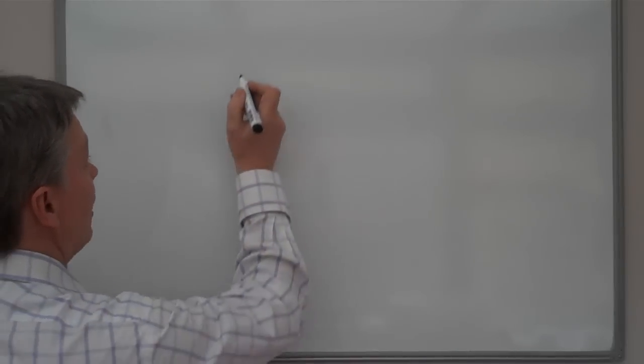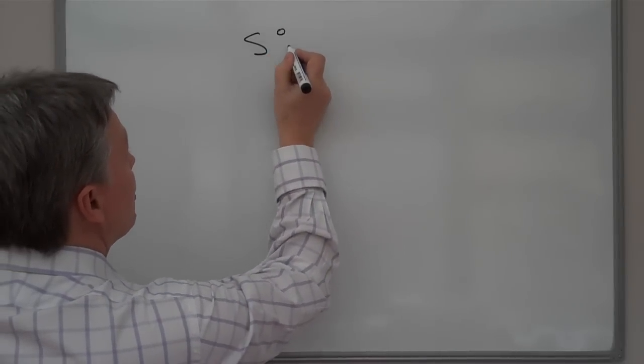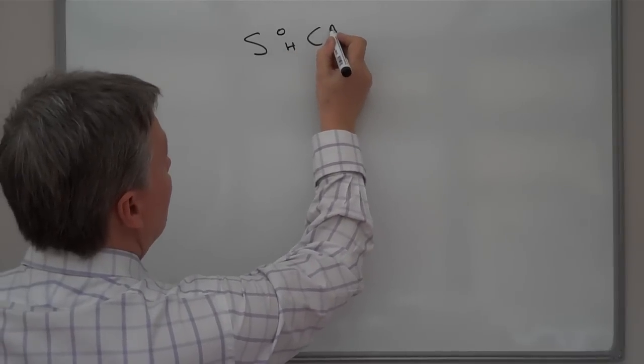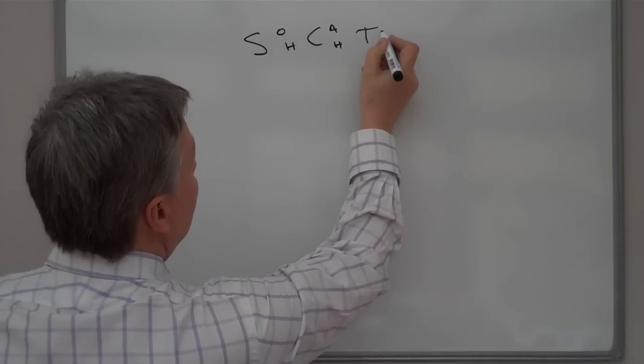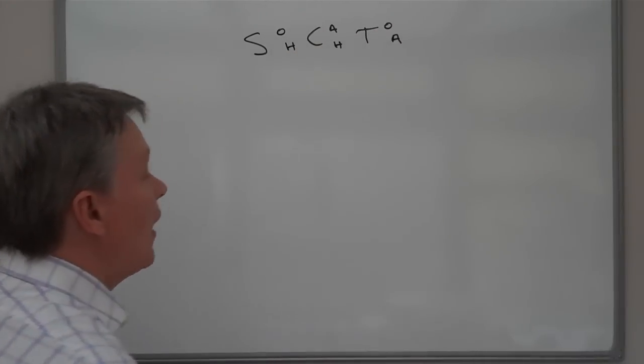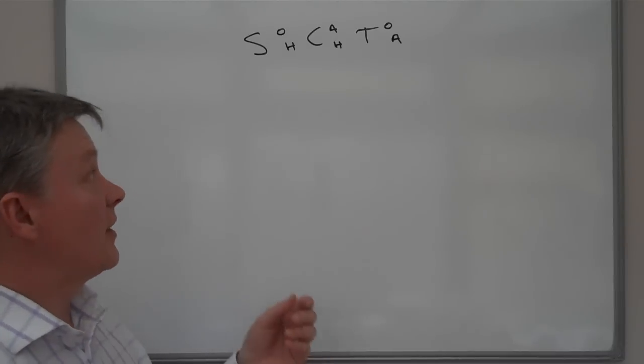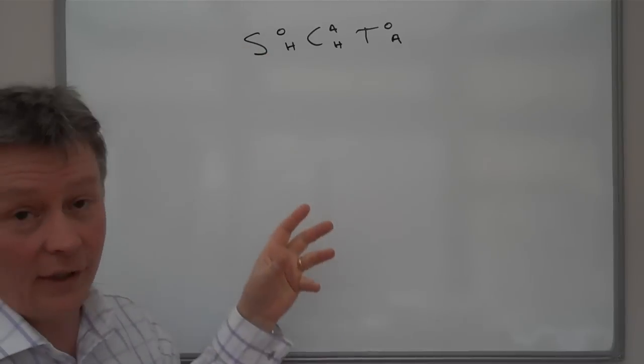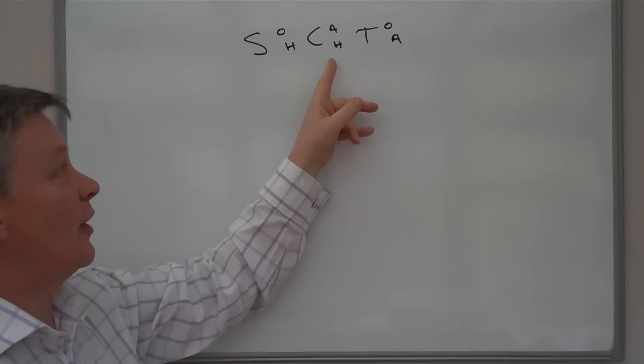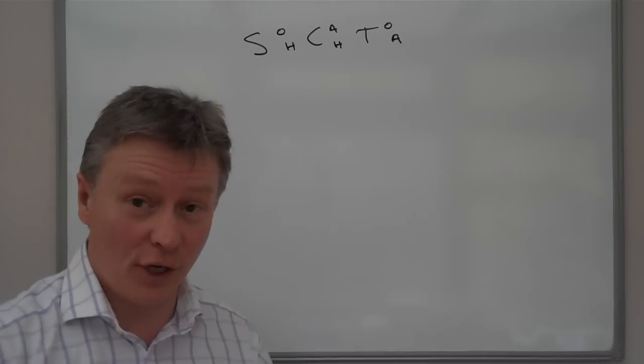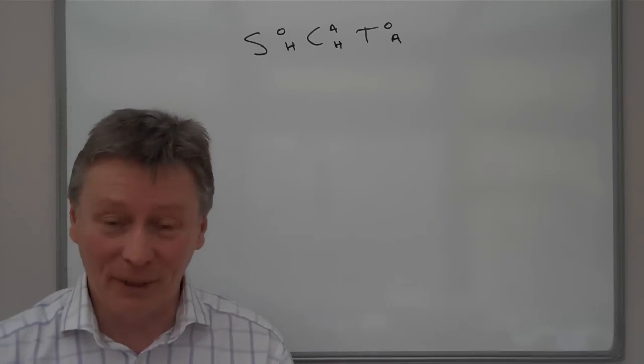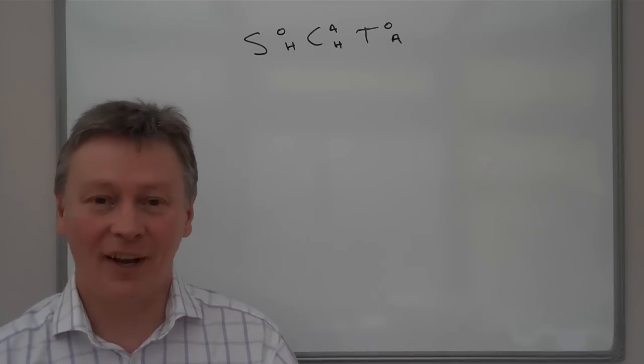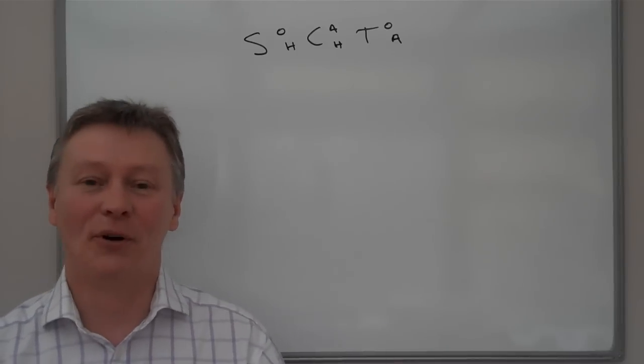Some people call it SOHCAHTOA, so I'm just going to put that up on the board just so it reminds us. I'm going to write it up as SOHCAHTOA. And the reason I've written it like that is because it reminds me that I've got sine equals opposite over hypotenuse, cosine equals adjacent over hypotenuse, tangent equals opposite over adjacent. And that will hopefully become a little bit clearer when I write the exam question up on the board.